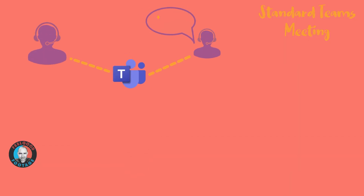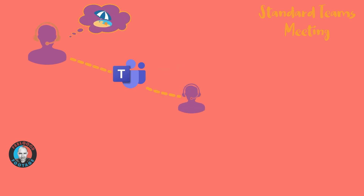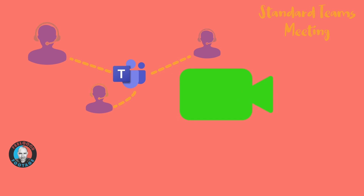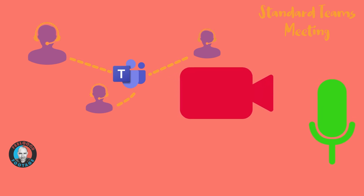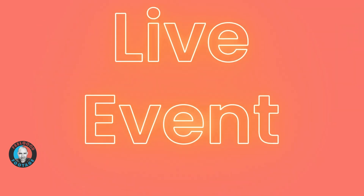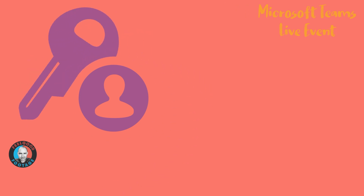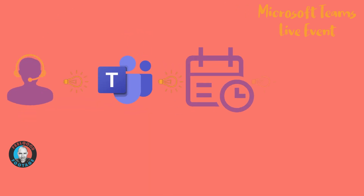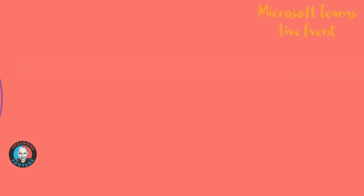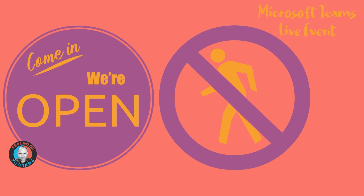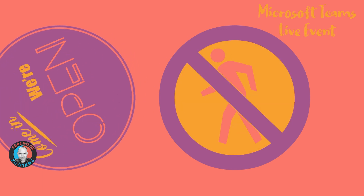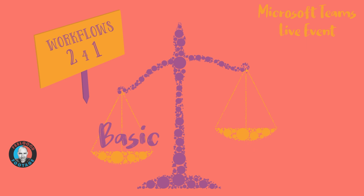People using Teams will no doubt schedule or participate in remote meetings most days during the current pandemic. As a standard Teams user, when you join a standard Teams meeting you can choose to join via video and audio or just audio — so far so normal, just like Zoom or Google Hangouts. But, with the correct additional permissions in place, a Teams user can also schedule a live event that can be set as either public or private.